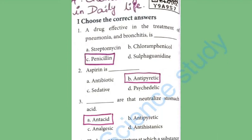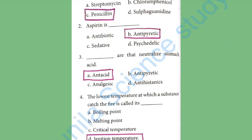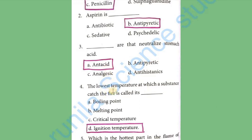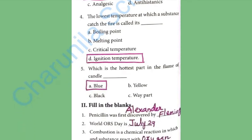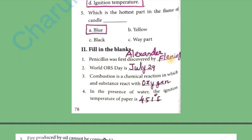Chemistry in Daily Life. Choose the correct answers. A drug effective in the treatment of pneumonia and bronchitis is penicillin. Aspirin is antipyretic. Antacids are the natural substances that neutralise stomach acid. The lowest temperature at which a substance catches fire is called the ignition temperature. The ignition temperature of paper is 451 degrees Fahrenheit.